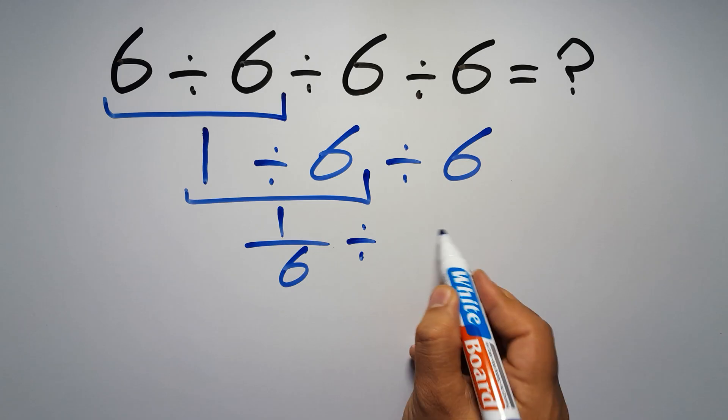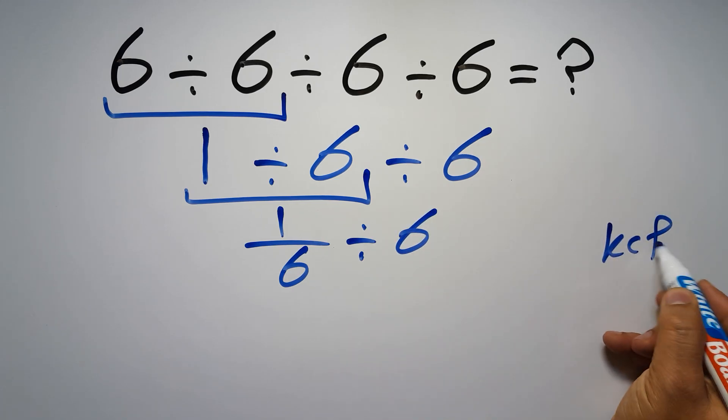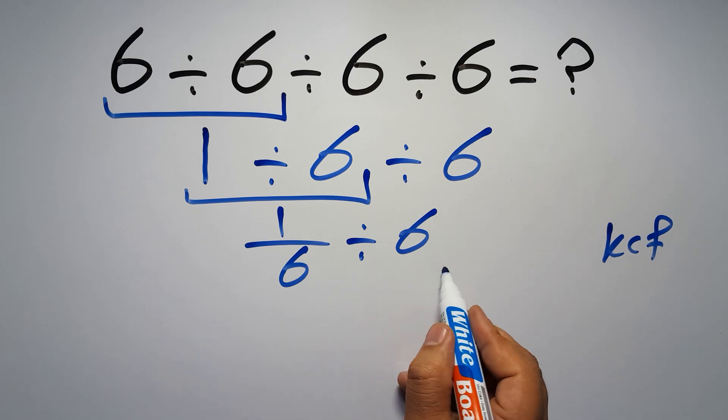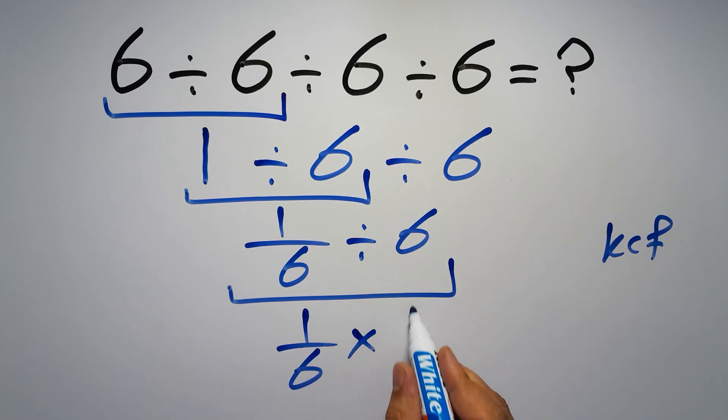Now, according to the KCF rule—K stands for Keep, C stands for Change, and F stands for Flip—we can write: keep the first fraction, change division to multiplication, and flip the second fraction.